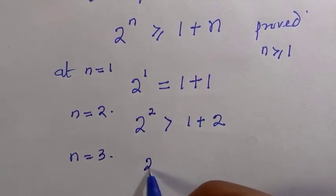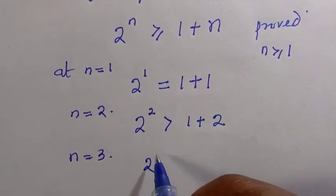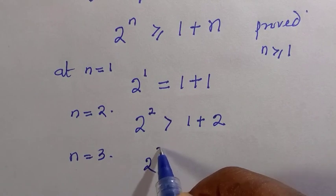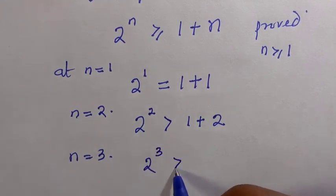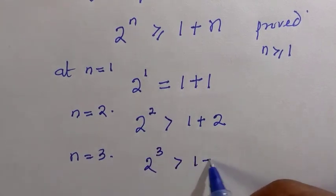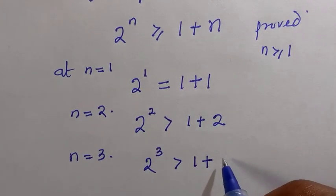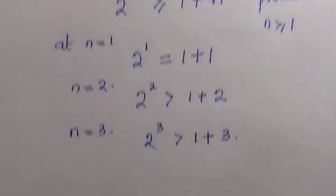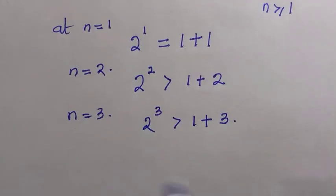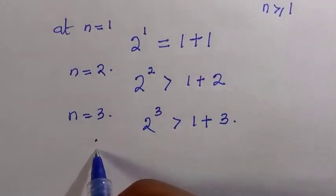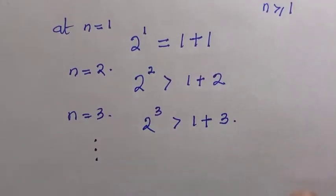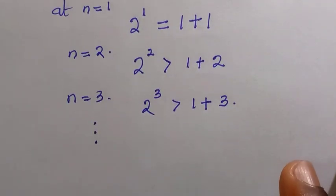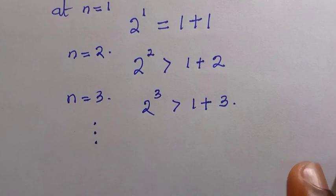So at n equals to 3, we have 2 raised to power 3, which is always greater than 1 plus 3, and it continues like that for as many values of n.